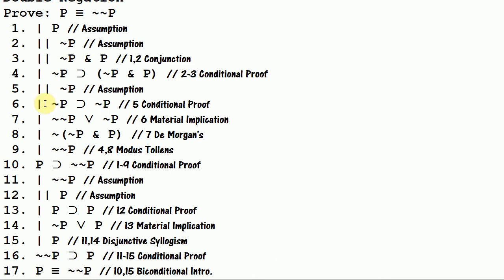And here's the important part I want you to pick up from this. Up here, we got a conditional with a consequent that is a contradiction. Anytime you can do this, you can use conditional proof to get a statement of a form that you can transform into the negation of that contradiction. And then you can use modus tollens to get the denial of the antecedent.